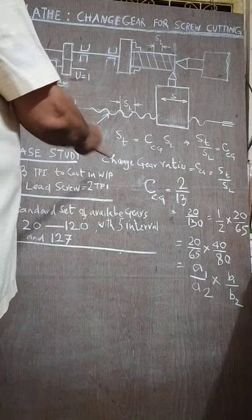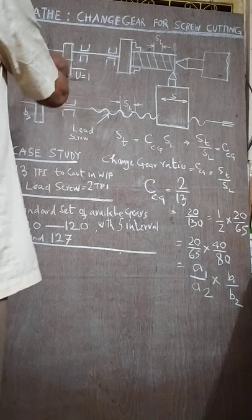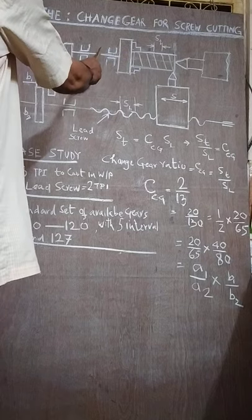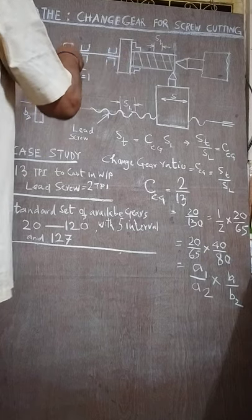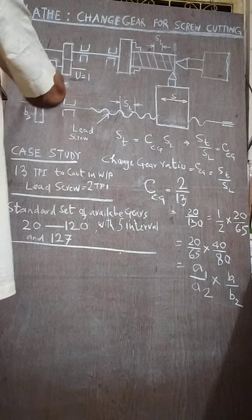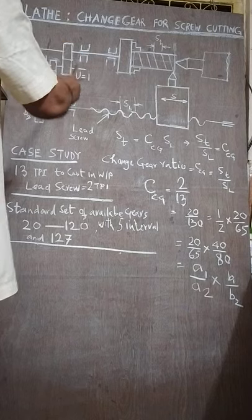The basic principle of screw cutting is that we will have a change gear arrangement from the spindle. From spindle to the lead screw motion there is a change gear arrangement. This change gear may be simple gear or compound gear.